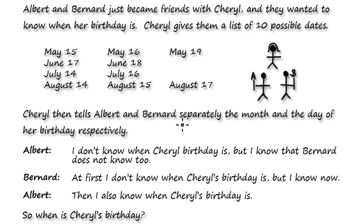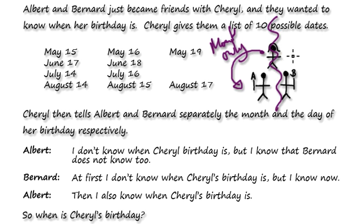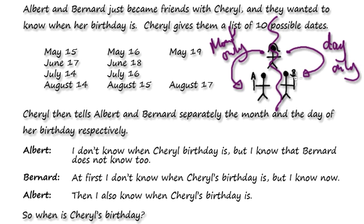Cheryl then tells Albert and Barnard separately the month and the day of her birthday respectively. Meaning Cheryl tells Albert the month only, and then on a separate occasion Cheryl tells Barnard the day only. So Barnard doesn't know the month and Albert doesn't know the day.